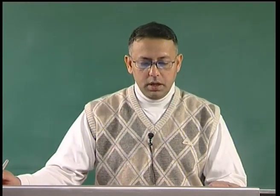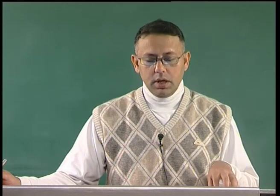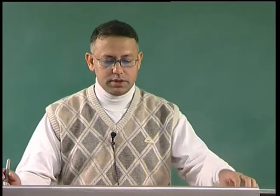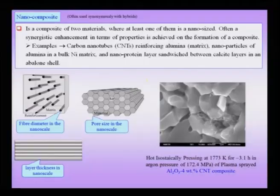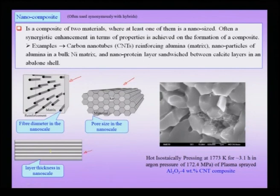One of the important terms is a nano composite. We have seen that there is a class of monolithic materials and hybrids. Sometimes the word 'hybrids' is used synonymously with composites, but composites is actually a subclass of hybrids. When talking about a nano composite, at least one of the components has to be in the nano scale — though all components could be nano sized.